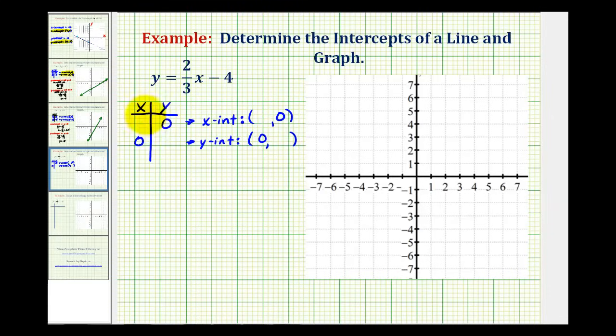Let's go ahead and do that down below here. We'll start by determining the x intercept. So we're going to set y equal to zero. So, we'd have the equation zero equals two-thirds x minus four.